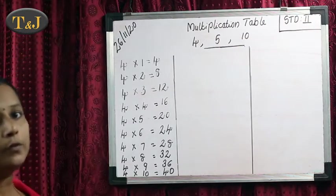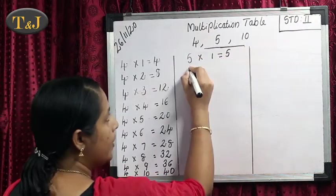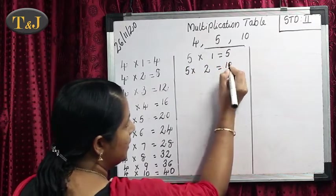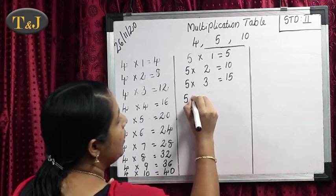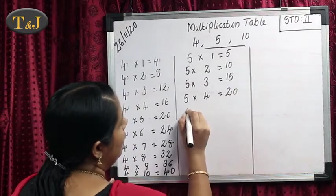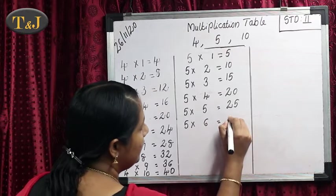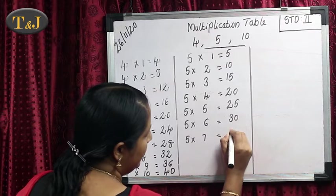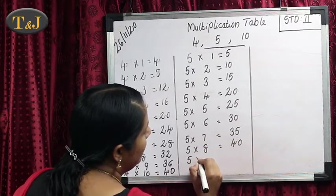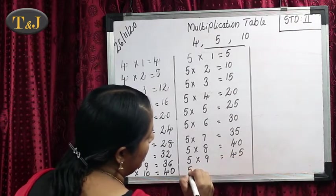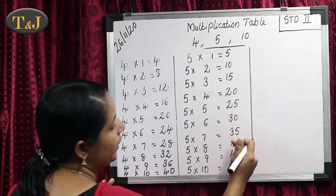Then next our table is the multiplication table of 5. 5 is a very easy table. 5 times 1 are 5, 5 times 2 are 10, 5 times 3 are 15, 5 times 4 are 20, 5 times 5 are 25, 5 times 6 are 30, 5 times 7 are 35, 5 times 8 are 40, 5 times 9 are 45, 5 times 10 are 50. It is a very easy table: 5, 10, 15, 20, 25, 30, 35, 40, 45 and 50.